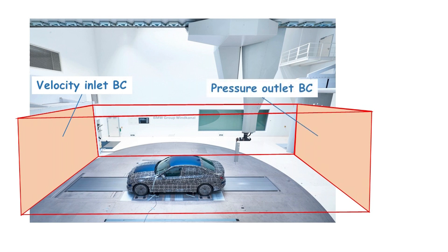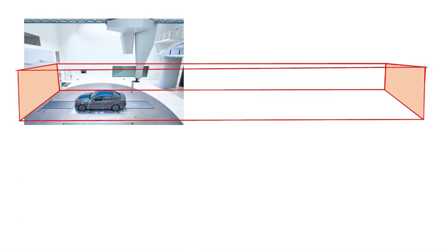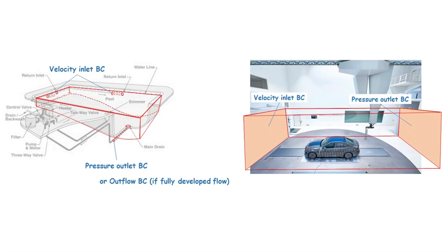However, it is also possible to place the outlet further downstream such that the flow at the outlet could reach a fully developed stage, thereby allowing the use of the outflow boundary condition. Note that in these two examples we haven't discussed the boundary conditions for the other boundaries except the inlet and outlet. Now I would like to introduce another commonly used boundary condition, which is perhaps the simplest one: the wall boundary condition.